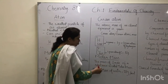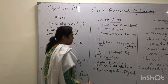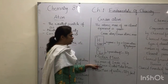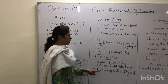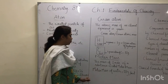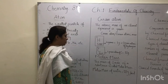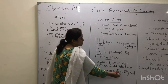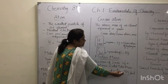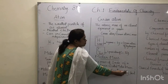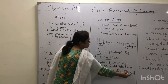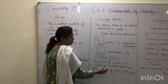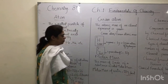Molar mass, on the other hand, is the mass of one mole of a substance. The molecular mass of water is 18 grams per mole — this gives you the molar mass of water.